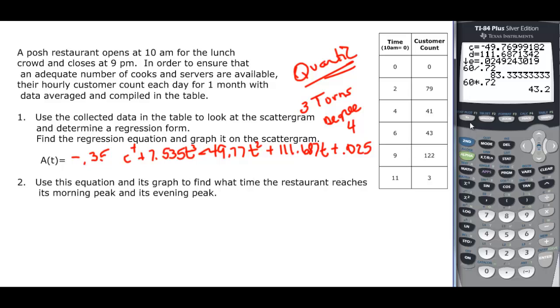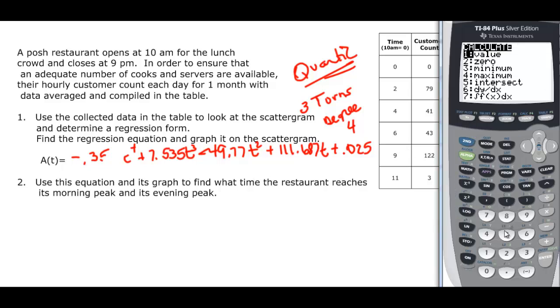And then if we go to the other one, second trace 4, and we go over to the other one, we're going to find out that that one is 9.13, or 9.1314. So 60 times 0.14 is going to give us about 7:08 for the time.